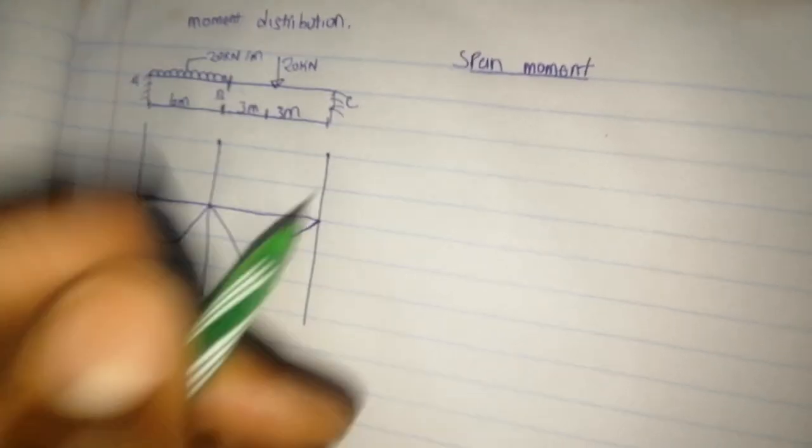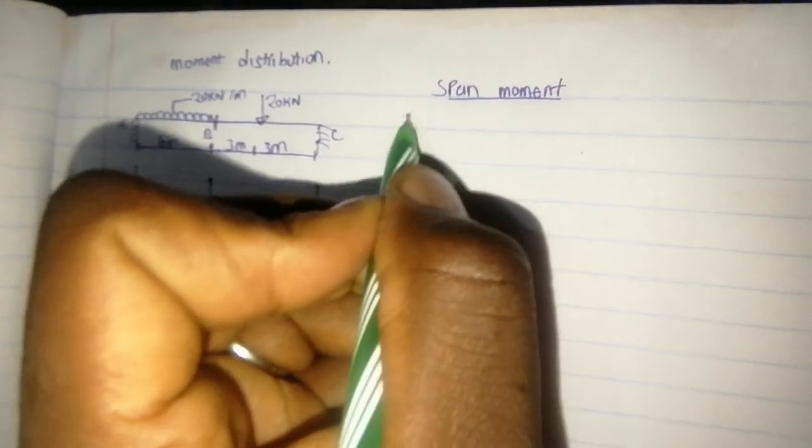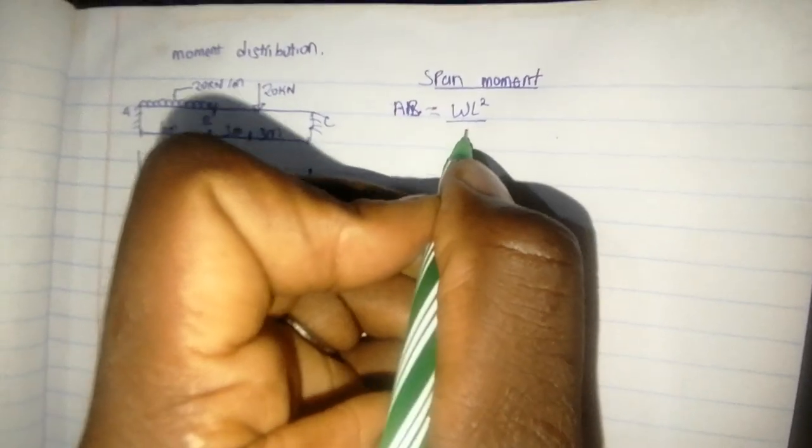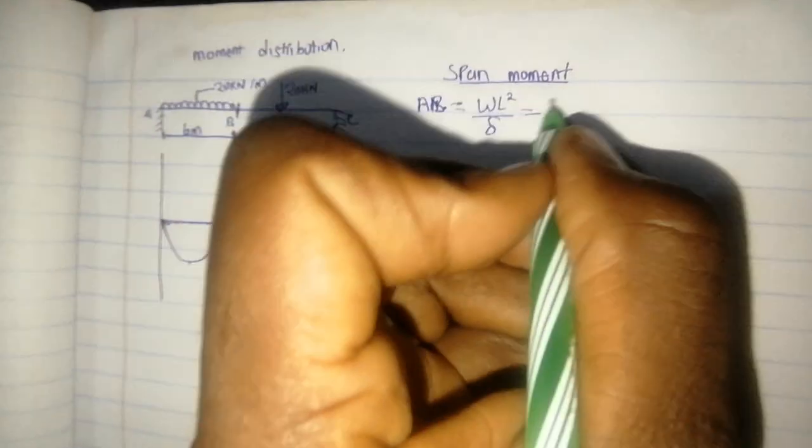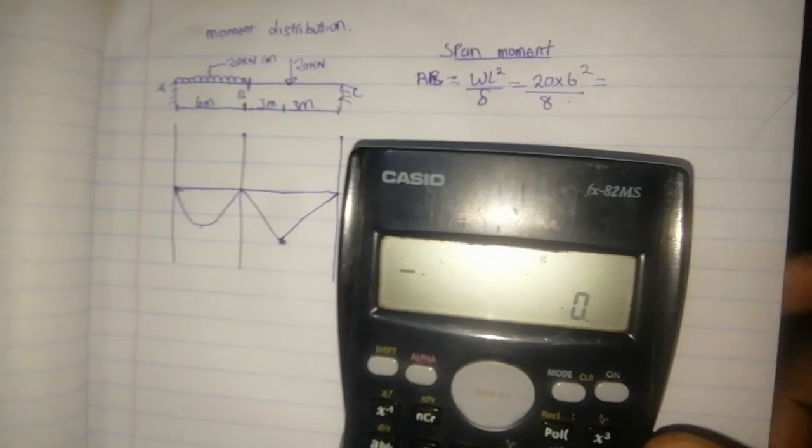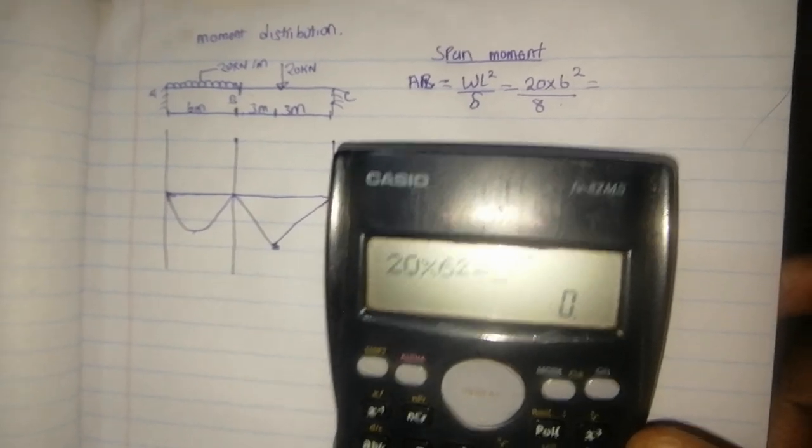When you are given a question like this, you draw a sketch first. For uniformly distributed load the diagram looks like a parabola. When looking for span moment, you are looking for the maximum point. We start with span moment of AB. The formula for uniformly distributed load is WL² divided by 8, so it will be 20 times 6² divided by 8, which equals 90 kN·m.